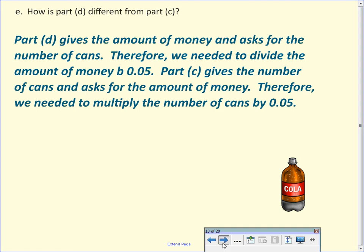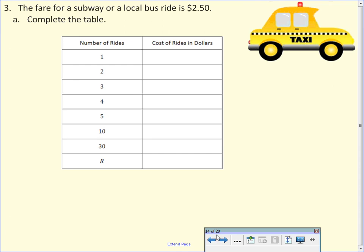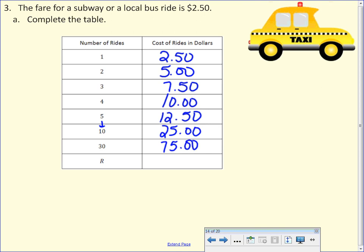Let's take a look at example three. The fare for a subway or a local bus ride is $2.50. I have no idea why I put a picture of a taxi on there. So let's complete the table. So we have the number of rides and the cost of the ride in dollars. So one ride is $2.50. Two rides is $5.00. $7.50. $10.00. $12.50. But now be careful. It jumps from $5.00 to $10.00. So $25.00. $75.00. So I'm taking my number of rides and I'm always multiplying it by... Right. So it's $2.50 times the number of rides. You could always drop that zero and do 2.5 times R also.